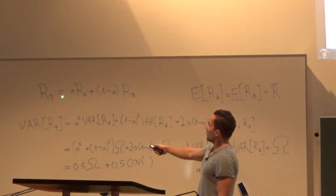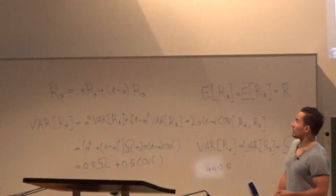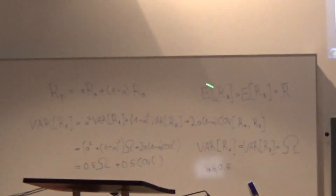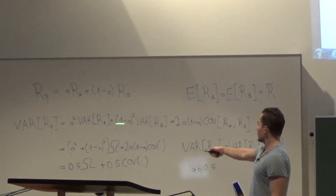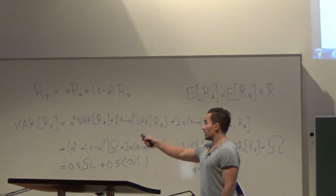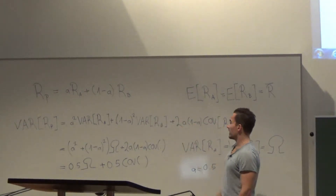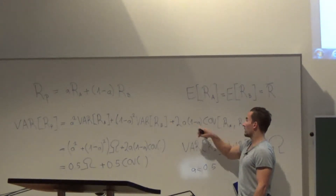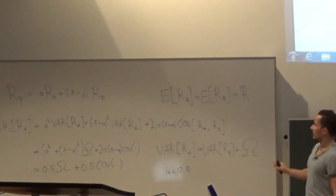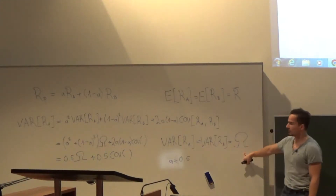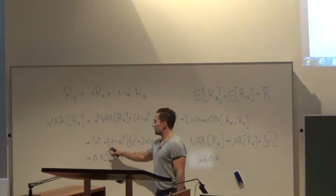We have a portfolio P where R denotes the overall portfolio return. We invest A — maybe 0.5 — and 1 minus A in asset B. Assuming the expected return is the same for both assets, we can compute the portfolio variance of R_P, which equals A squared times the variance of the first asset, plus (1 minus A) squared times the variance of the second asset, plus 2 times A times (1 minus A) times the covariance between those two assets.